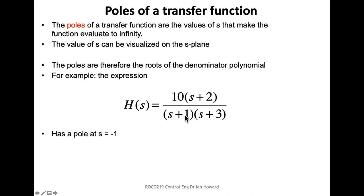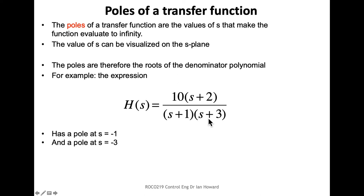If the S plus 1 goes to zero, the whole thing explodes to infinity. Or if the S plus 3 goes to zero, the whole thing again will go to infinity. The values that set this to infinity are when S equals minus 1 in the first bracket — minus 1 plus 1 goes to zero — or when S equals minus 3 in the second bracket term, where minus 3 plus 3 sets that to zero.